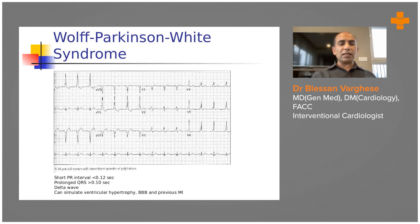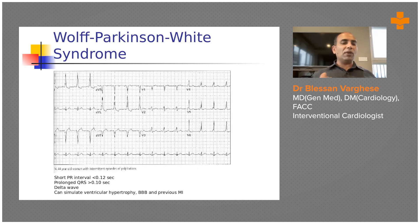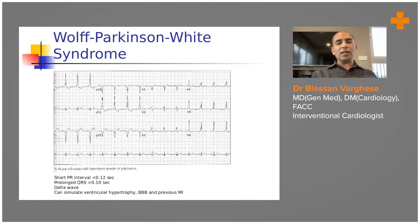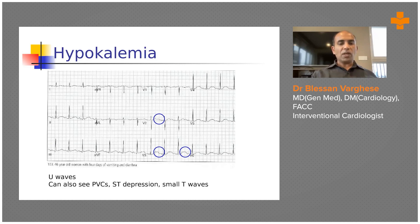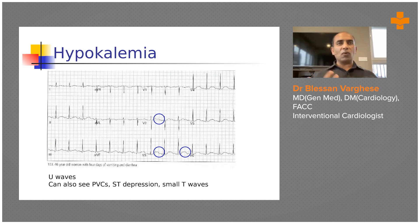WPW syndrome is easy to diagnose: look for the classic delta wave with a very short PR interval, followed by a wide QRS and an inverted T wave. The short PR, wide QRS, delta wave, and T-wave inversion are the features. We call it WPW pattern; only when arrhythmia is associated is it called WPW syndrome. The final ECG demonstrates U waves in hypokalemia — the T wave is already prolonged, and small U waves following the T wave are visible, which should prompt checking the serum potassium level.